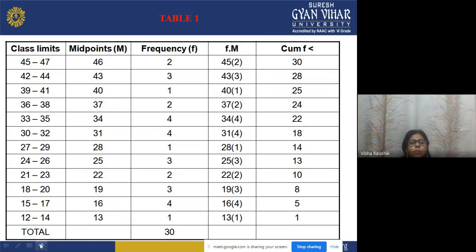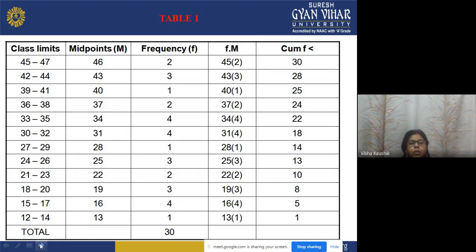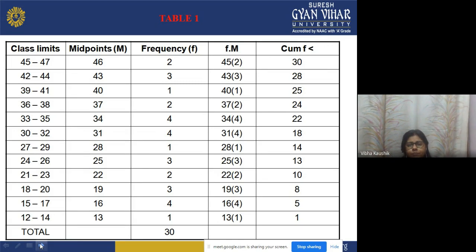The frequencies for each class interval are: 45–47: 2, 42–44: 3, 39–41: 1, 36–38: 2, 33–35: 4, 30–32: 4, 27–29: 1, 24–26: 3, 21–23: 2, 18–20: 3, 15–17: 4, 12–14: 1. The total frequency is 30. The fm column represents frequency multiplied by midpoint.